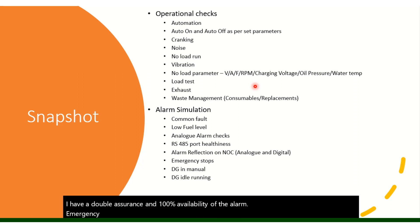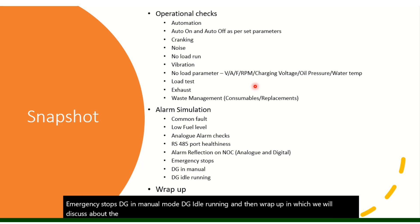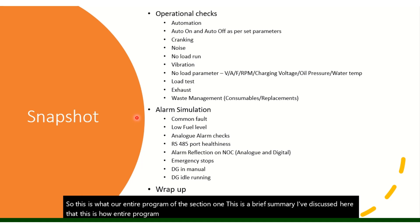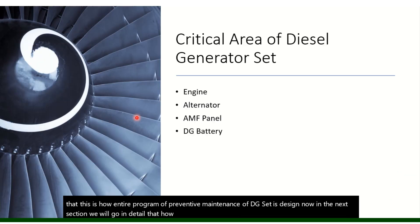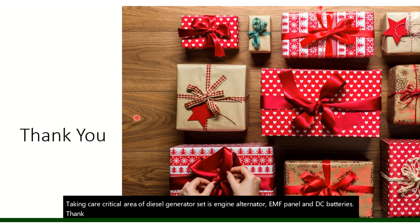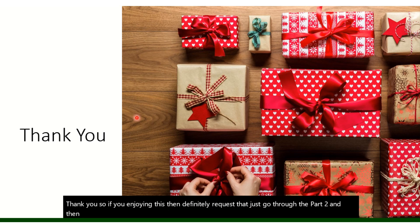Emergency stops, DG in manual mode, DG idle running, and a wrap-up covering tools, techniques, and documentation work complete the program. This is the brief summary of the entire preventive maintenance program design for the DG set. In the next section, we will go into detail on the critical areas: diesel engine, alternator, AMF panel, and DG batteries. If you are enjoying this course, please go through Part Two, Part Three, and Part Four to cover your entire PM strategy for the DG. Thank you.